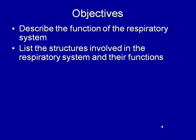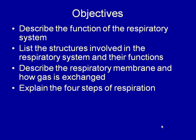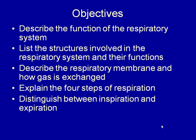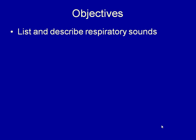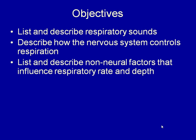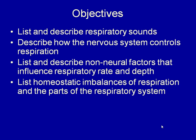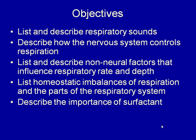After completing this section, you should be able to describe the function of the respiratory system, list the structures involved and their functions, describe the respiratory membrane and how gas is exchanged across it, explain the four steps of respiration, distinguish between inspiration and expiration, list the factors that affect breathing volume and capacity, list and describe respiratory sounds, describe how the nervous system controls respiration, list and describe non-neural factors that influence respiratory rate and depth, list homeostatic imbalances of respiration, describe the importance of surfactant, and describe developmental disorders of the respiratory system.